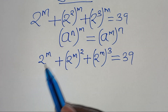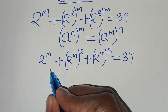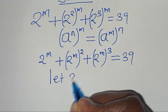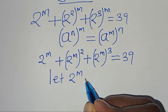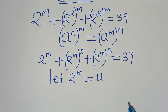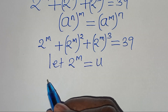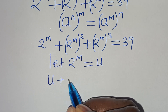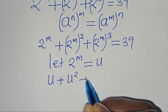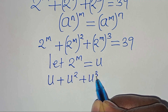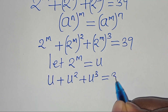Now, we have that 2 to the power of m is common here, so we can let 2 to the power of m be equal to u. Substituting u, we have u plus u squared plus u to the power of 3. This is equal to 39.